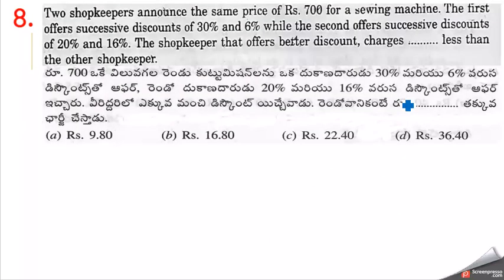Next question. Two shopkeepers announced the same price of 700 rupees for a shaving machine. The first offers successive discounts of 30% and 6%, while the second offers successive discounts of 20% and 16%. Which shopkeeper offers a better discount and by how much less does he charge?